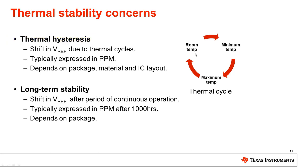The amount of thermohysteresis is normally specified in the device datasheet. Another effect that can cause the reference output to shift is long-term stability, sometimes referred to as aging, because the performance of the device will change across time. The prevailing wisdom is that the majority of the shift occurs in the first 1,000 hours, as long-term stability is related logarithmically with time. Both thermohysteresis and long-term stability are often referred to as device non-repeatability, because they refer to changes in the nominal output of the device.